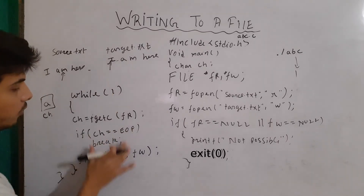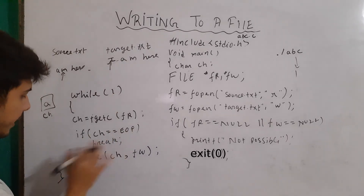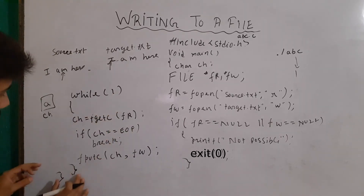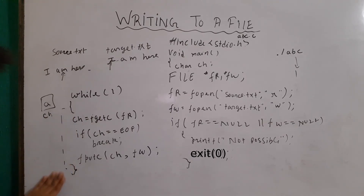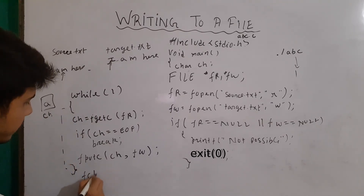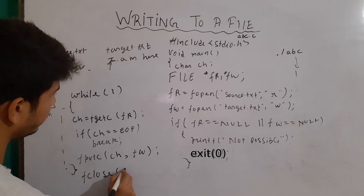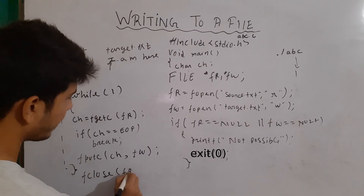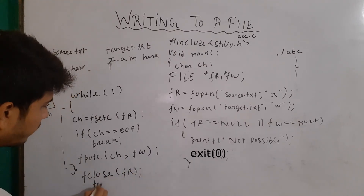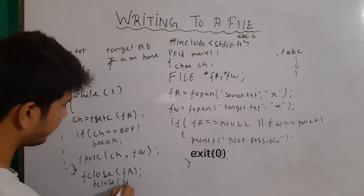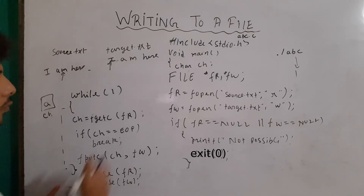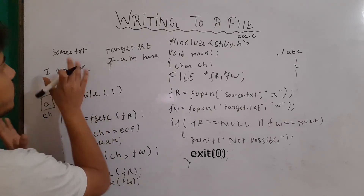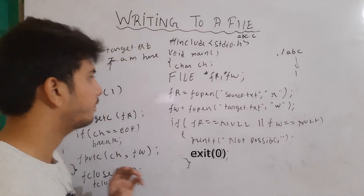So the loop will be terminated and the infinite loop block will end. After that I'll close these two files — I'll write fclose(fr) and fclose(fw) — and I'll close the main program. This is how we are able to write the content of one file to another file.